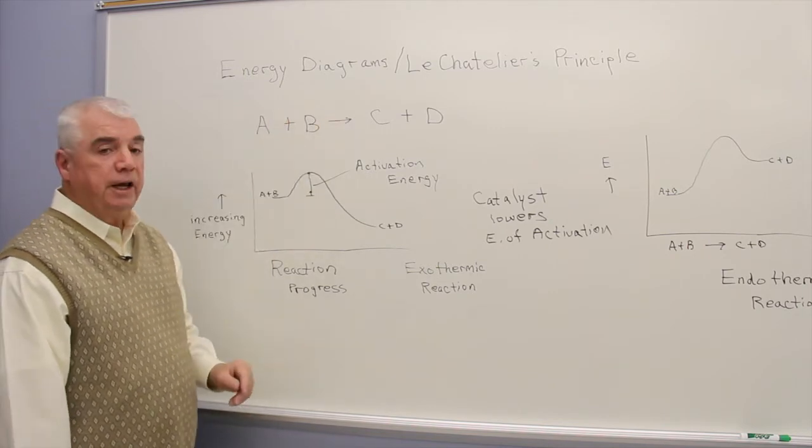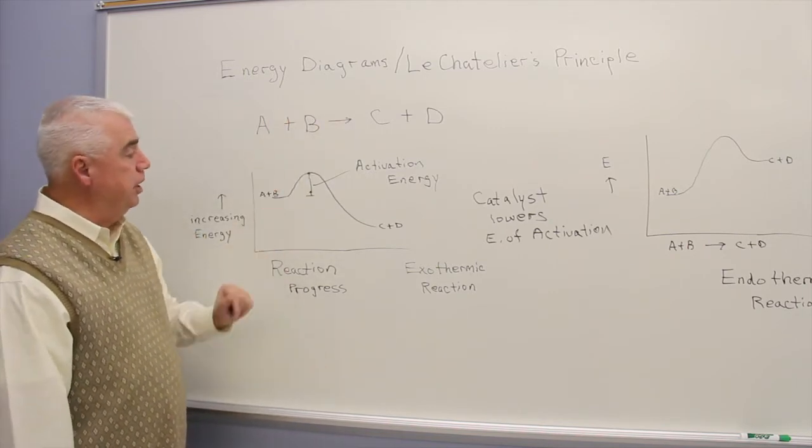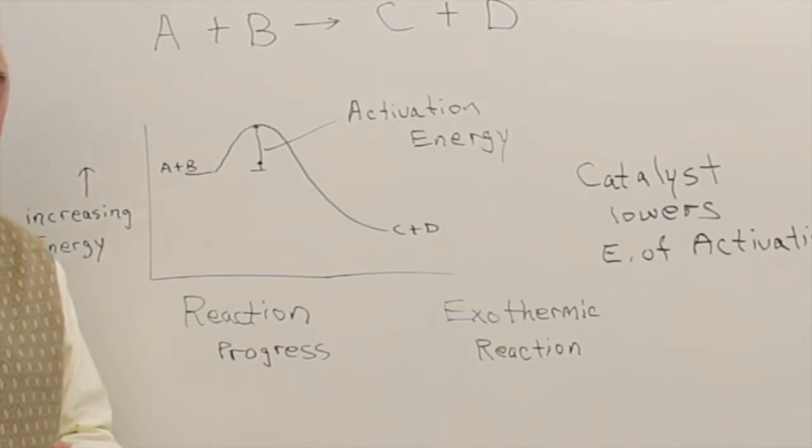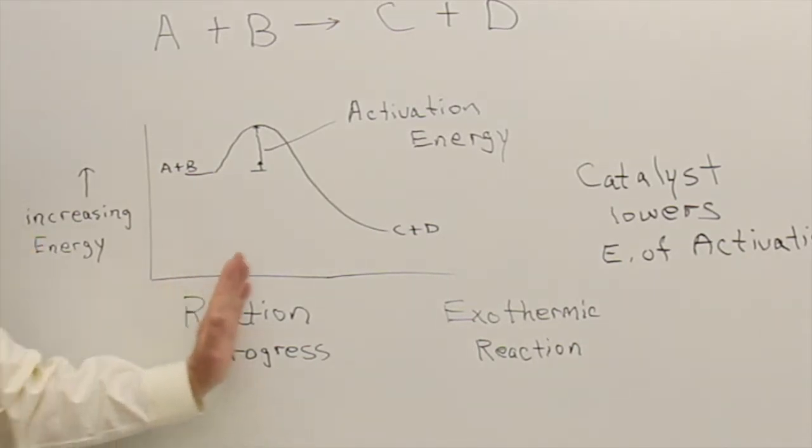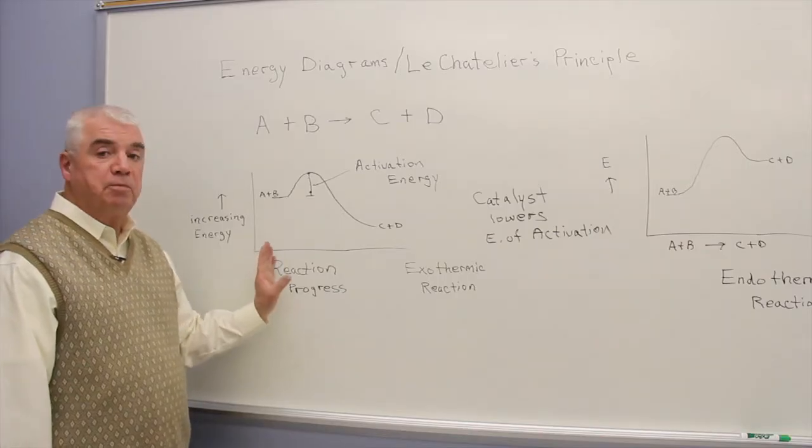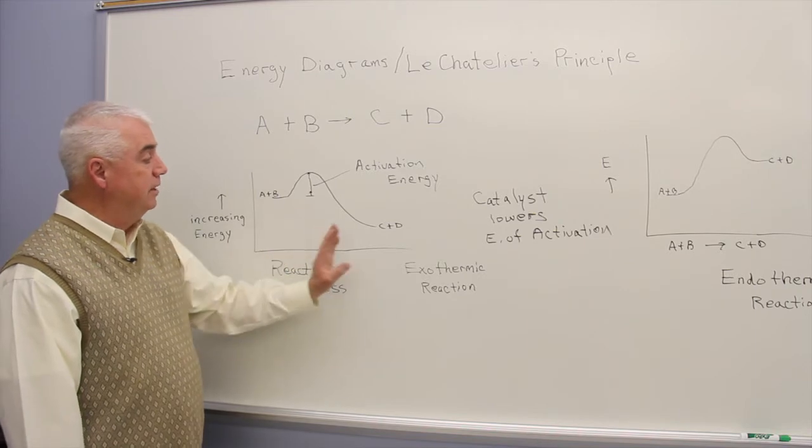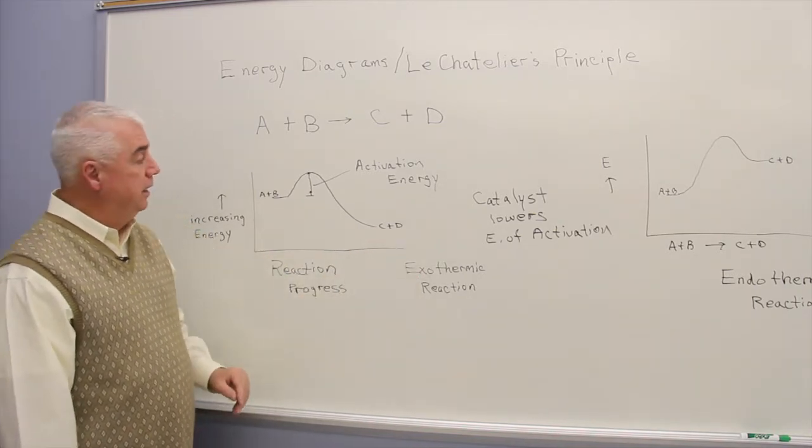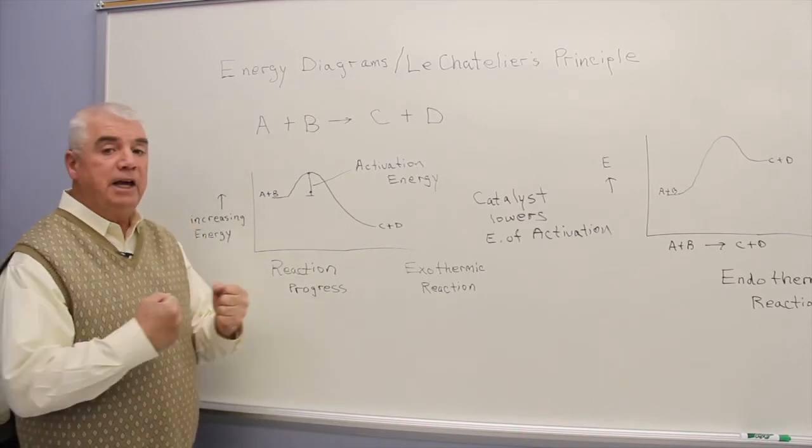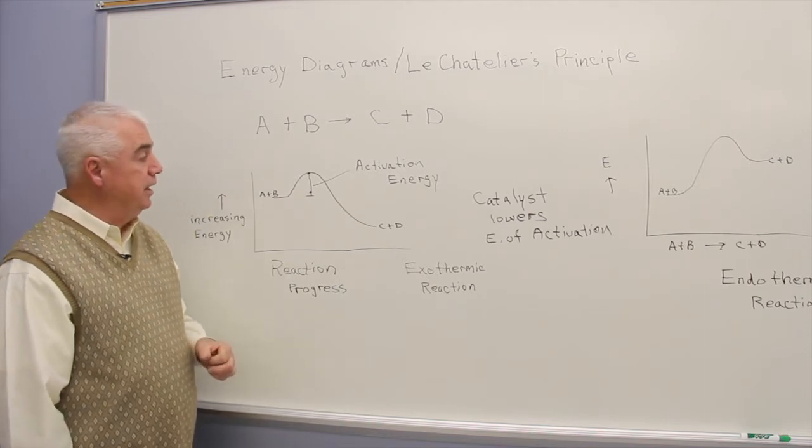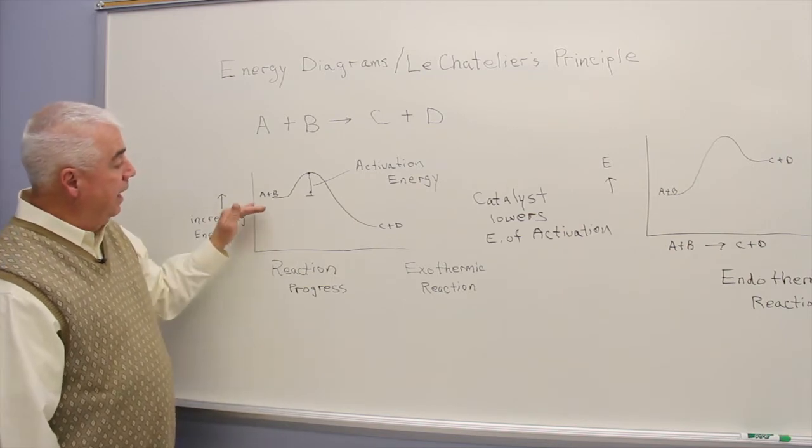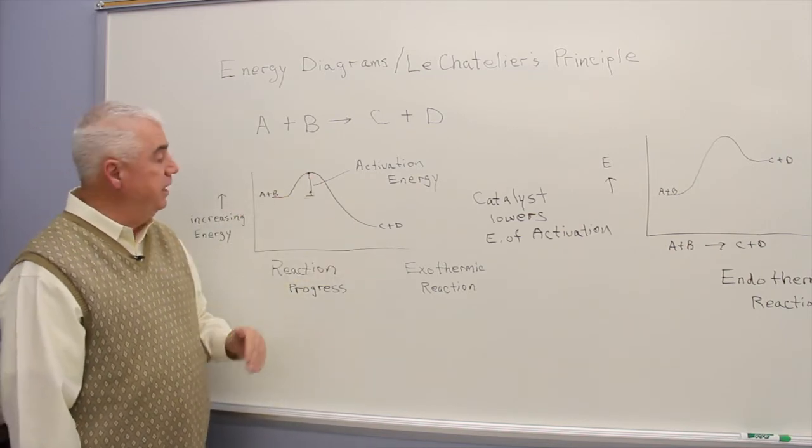Here's a theoretical reaction: A plus B goes to C plus D. We can represent that reaction by using an energy diagram where the vertical axis is energy, energy increasing in the vertical direction. On the horizontal axis, we have the reaction progress.